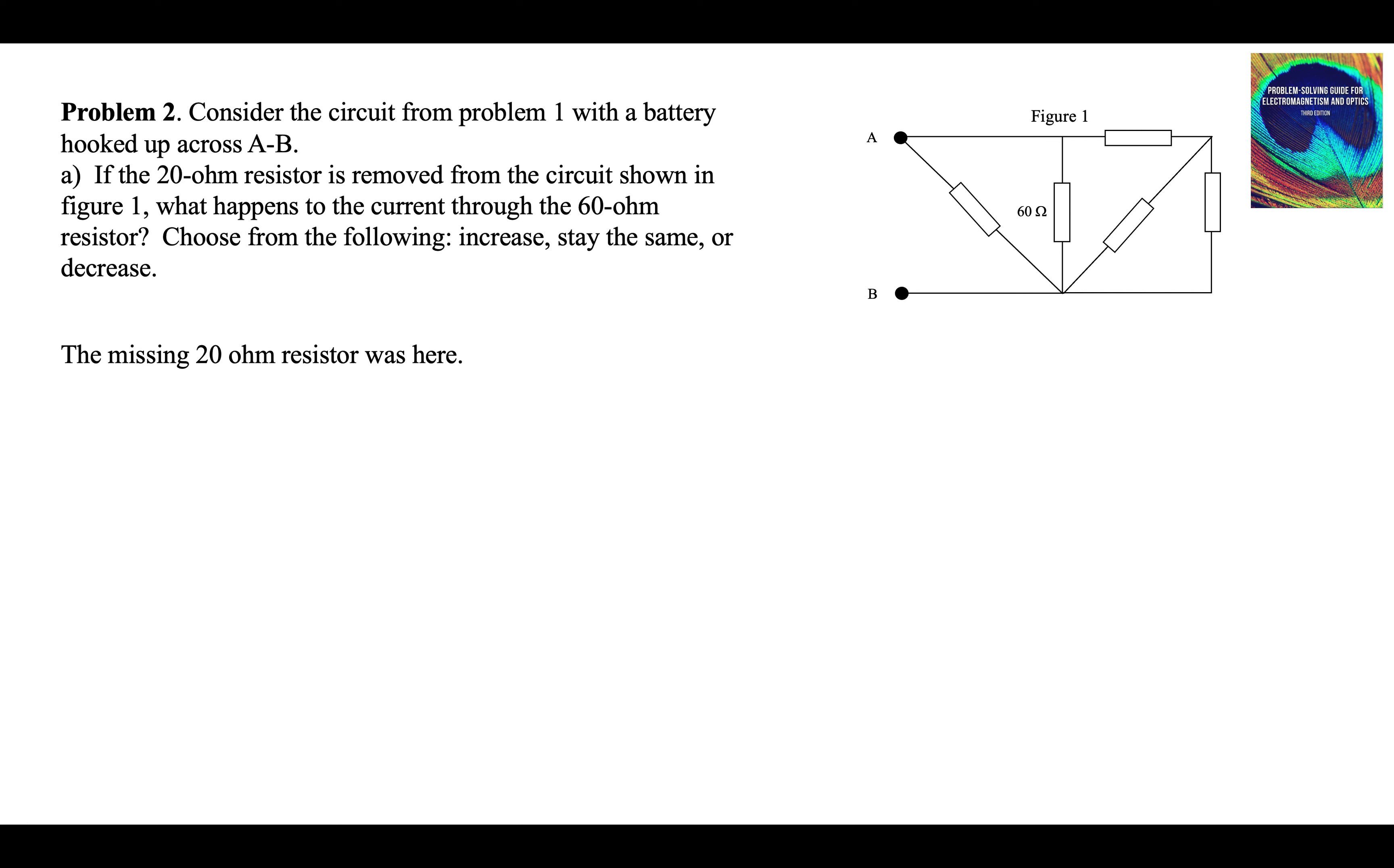What is the voltage drop across the 60? It's still 12 volts. It's going to draw 200 milliamps from the battery. Removing this one has no effect on the current through the 60-ohm resistor. The answer is stay the same.